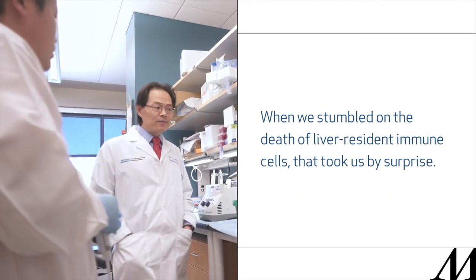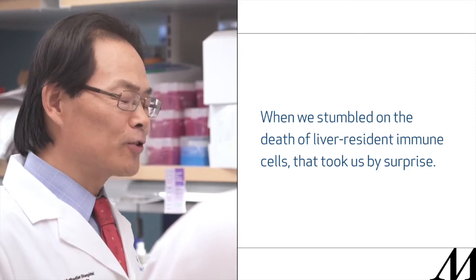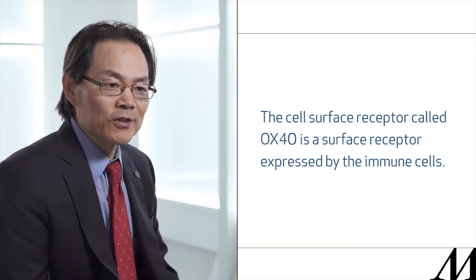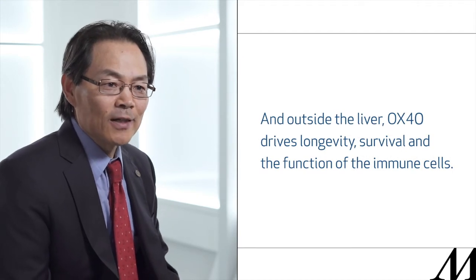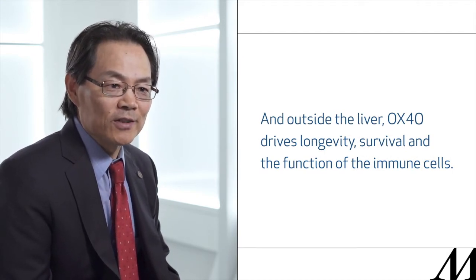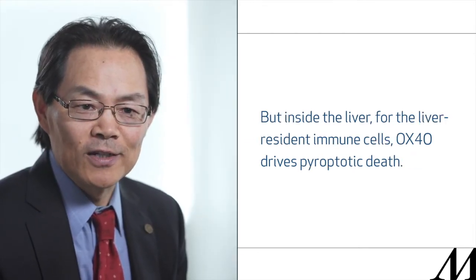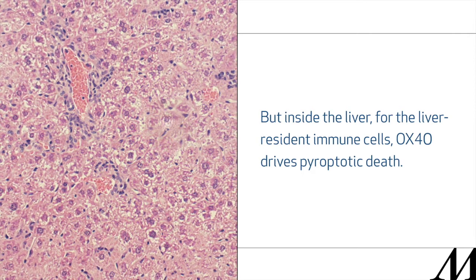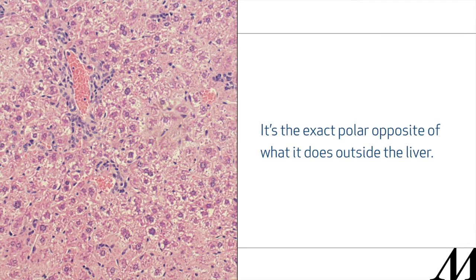When we stumbled on the death of liver resident immune cells, that took us by surprise. The cell surface receptor called OX40 is expressed by immune cells outside the liver, and OX40 drives longevity, survival, and function of those immune cells. But inside the liver, for the liver resident immune cells, OX40 drives pyroptotic death — the exact polar opposite of what it does outside the liver.